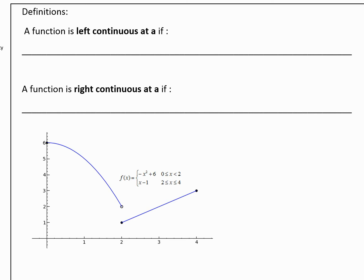So a function is left continuous at A if the left-handed limit as x goes to A from the left of f(x) equals f(A). So if the function value is equal to the left-handed limit. And we say a function is right continuous at A if the right-handed limit of f(x) equals the function value.